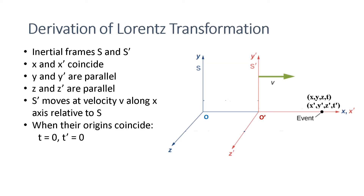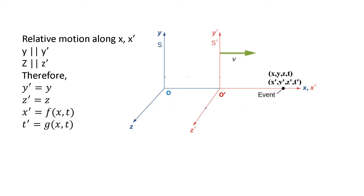Consider two inertial frames S and S prime. Assume that their axes X and X prime always coincide, Y and Y prime are always parallel, and Z and Z prime are always parallel. S prime is moving at velocity V along the X axis relative to frame S, and when their origins coincide, their clocks are set to zero. The motion is only along axis X or X prime; the other corresponding pairs of axes are always parallel.